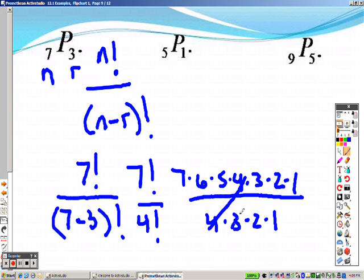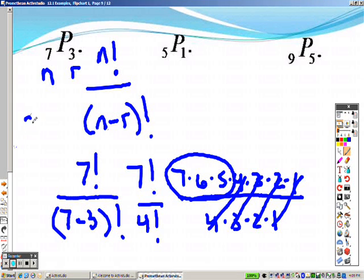They both have a 4, a 3, a 2, and a 1. So when we cross it out, really, that's all you've got to plug in on your calculator. This is 7 times 6 times 5. So the correct answer to this problem right here is 210.